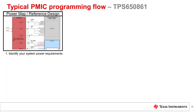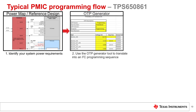Shown here is the typical PMIC programming flow for the TPS-650861 device. You will start by identifying your system power requirements, typically in the form of a power block diagram or power tree. Next, you will use the OTP generator tool to translate the desired settings into an I2C programming sequence.